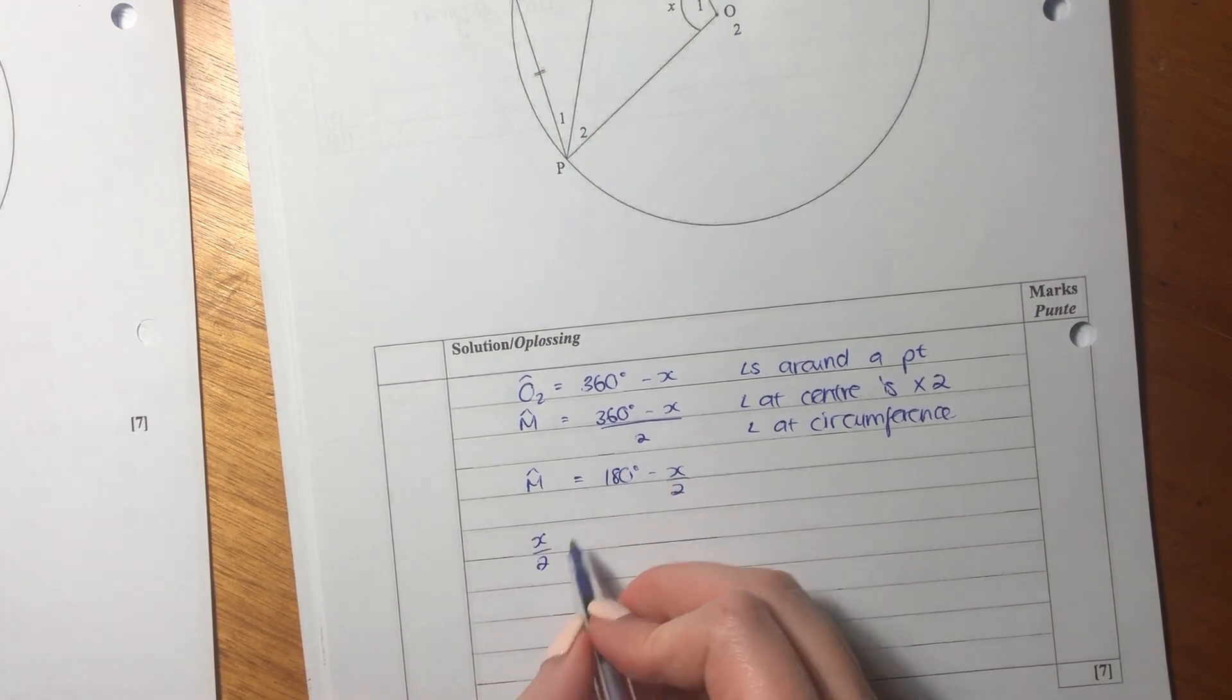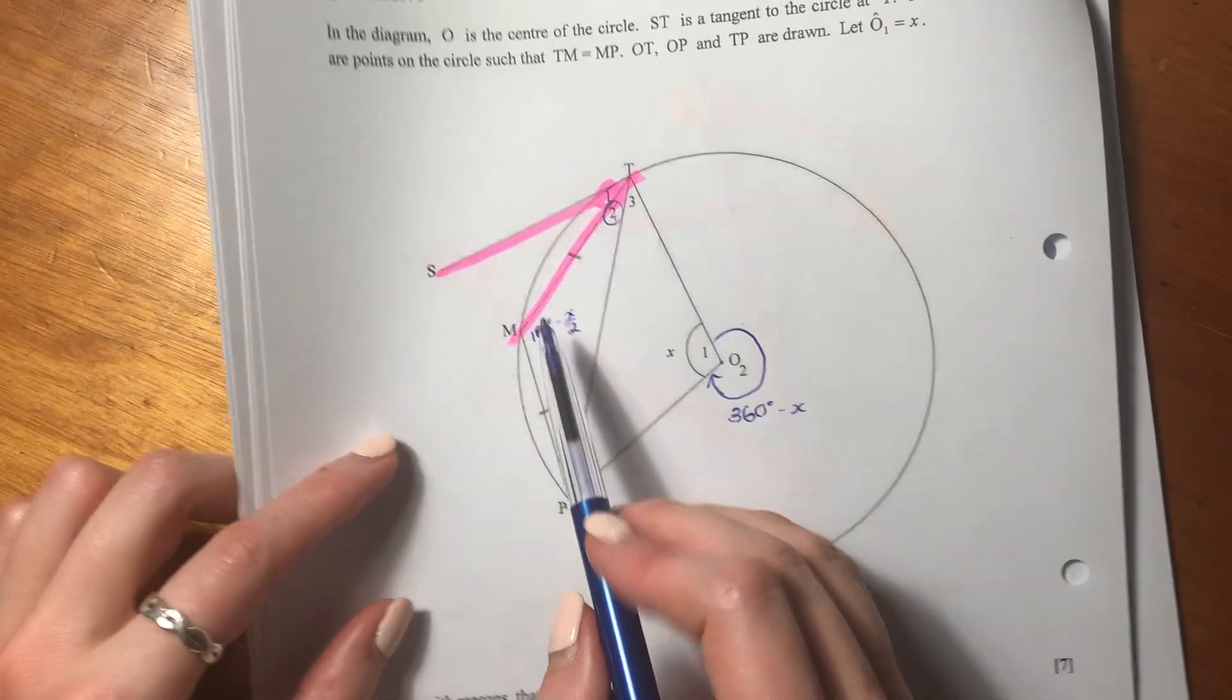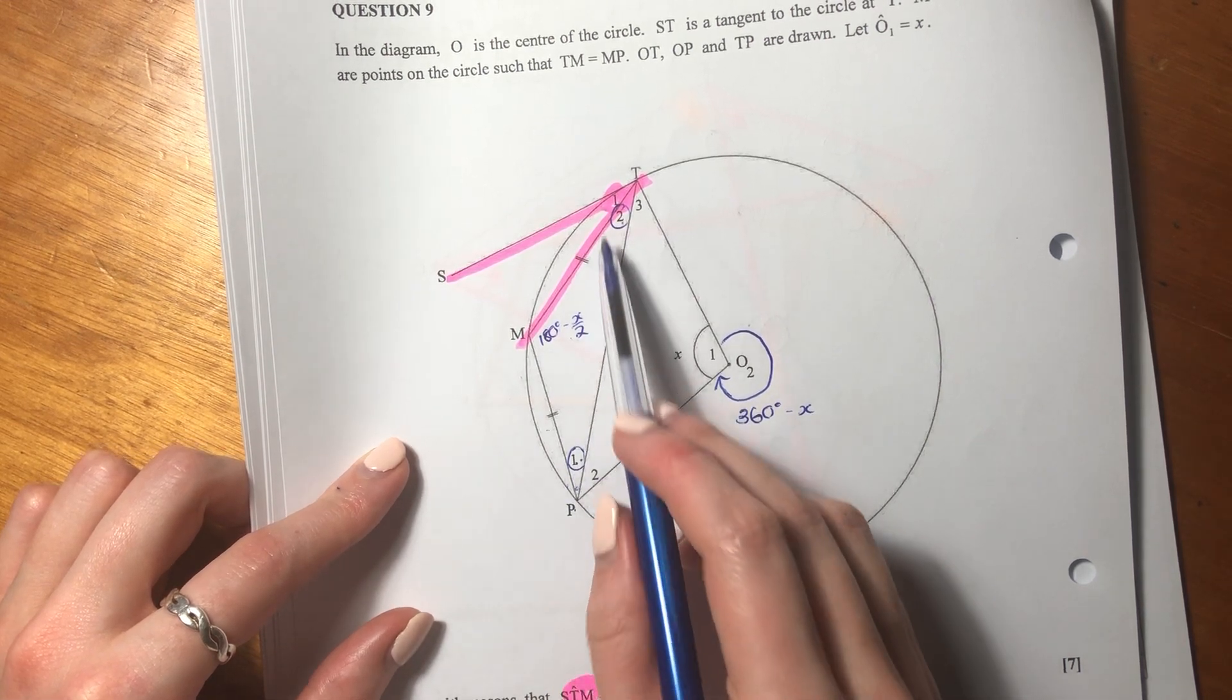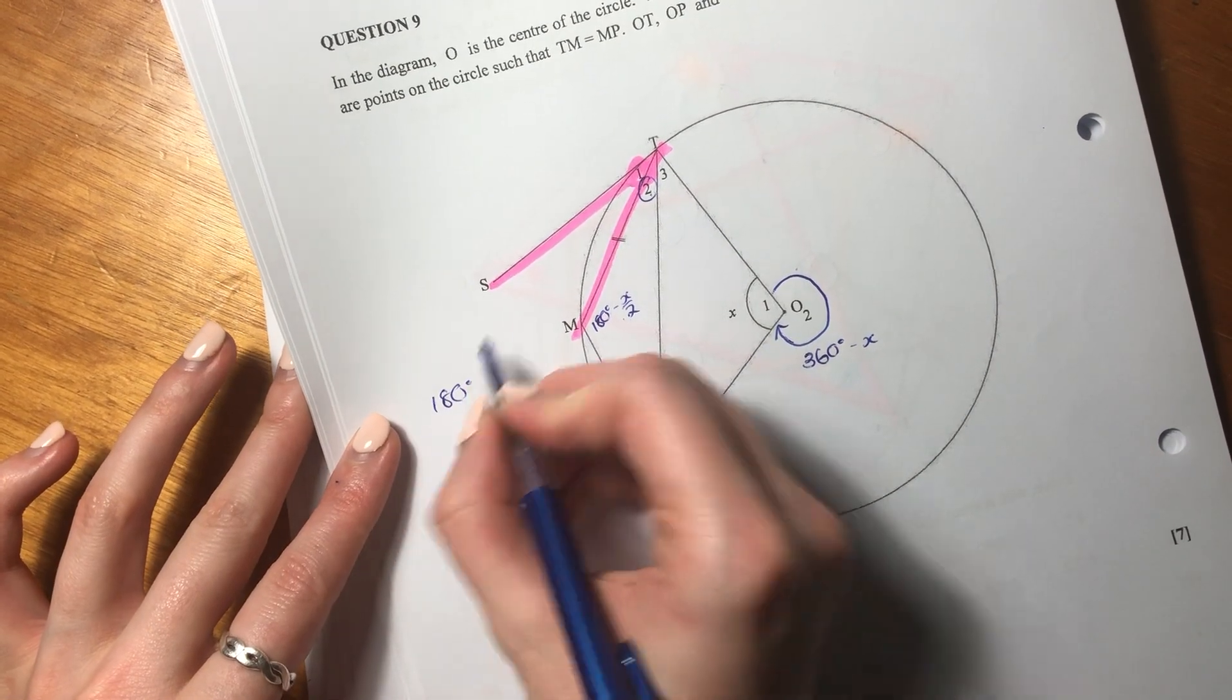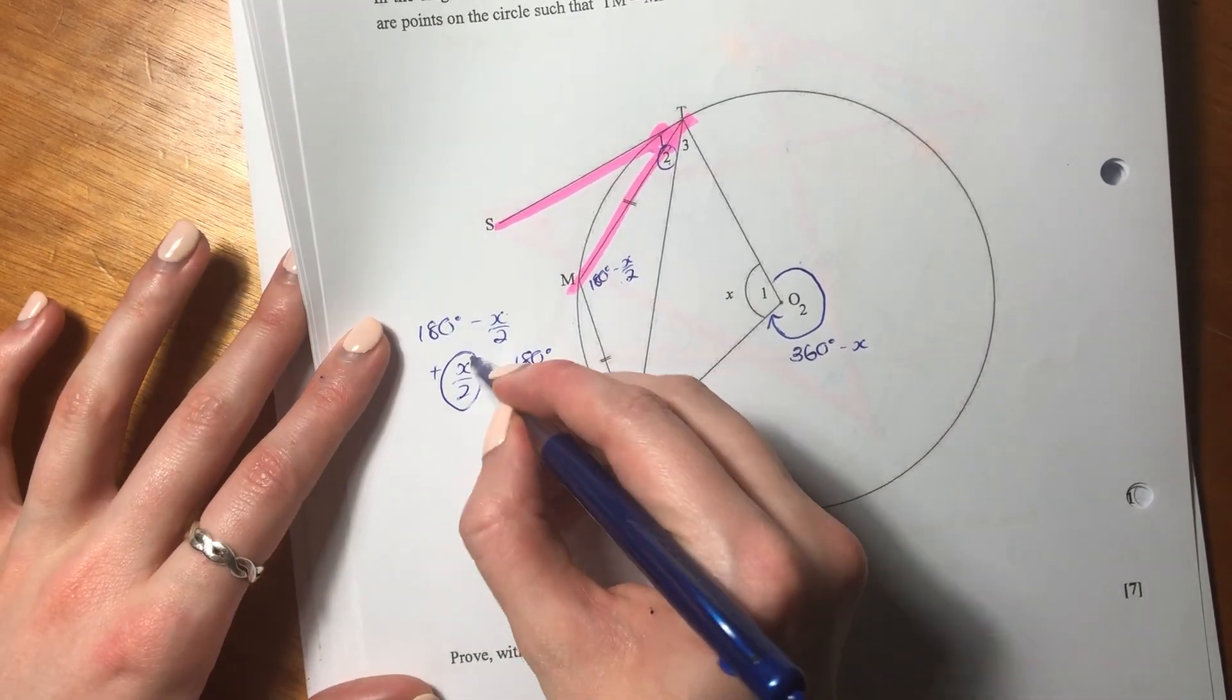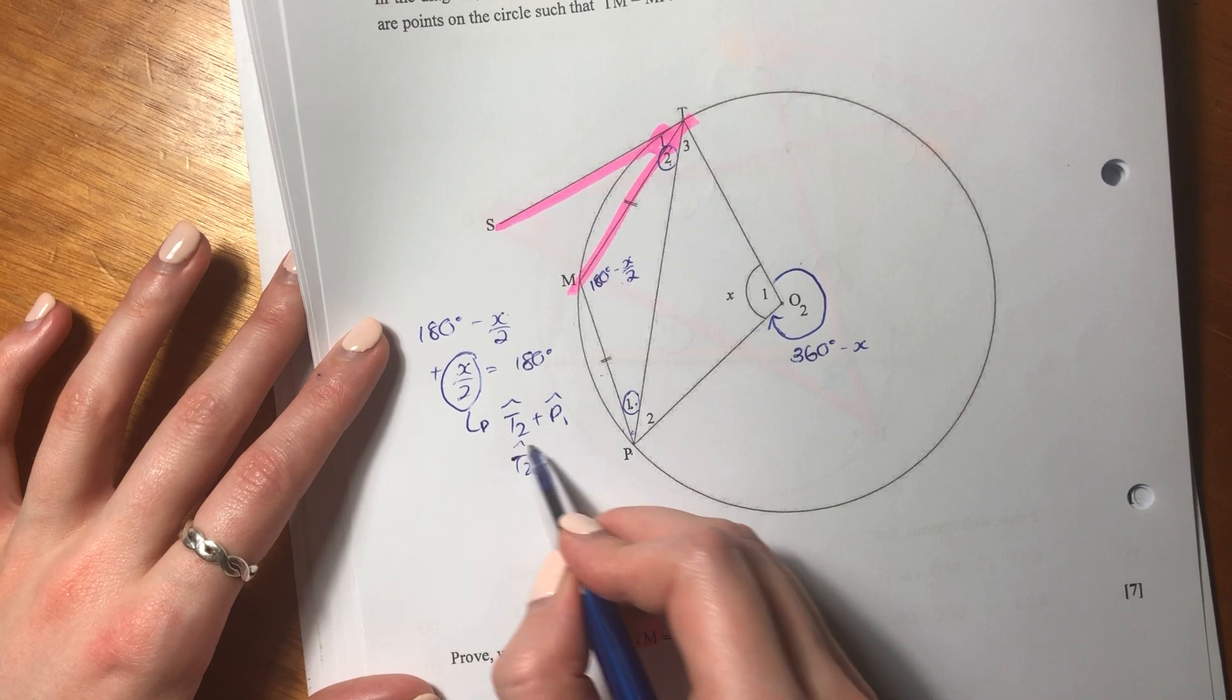So we say X over 2 times by half, because I'm basically making it half. We're saying 180 minus this amount. If we take this amount and we divide it by 2, then all of those add up to 180. So I'm basically saying 180 minus X over 2 plus X over 2 equals 180, which should make sense to you. So I'm basically saying this X over 2 equals T2 plus P1. And we know that those two, T2 equals P1.